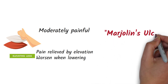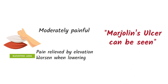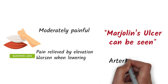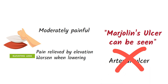Marjolin's ulcer, which is a type of squamous cell carcinoma due to long-standing ulcers, may be seen in venous ulcers. However, in arterial ulcers, Marjolin's ulcer usually does not develop because patients seek treatment early due to it being severely painful, and this squamous cell carcinoma happens only when there is a long-standing ulcer.